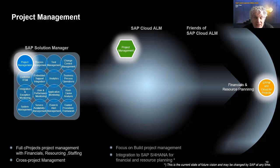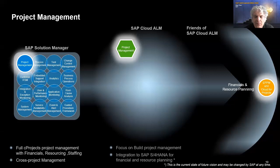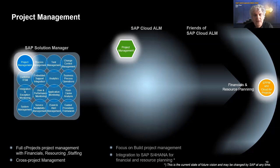In Solution Manager, we have full project support with financial resourcing and staffing. In Cloud ALM, the focus is on tracking the build project progress — more looking at the progress from the software solution side. What we are not providing in Cloud ALM going forward is financials, resourcing, and staffing — which, by the way, not so many Solution Manager customers were actually using. If that functionality was used, it was rather in a separate system for project portfolio management. Going forward, this will be a capability that sits in S/4HANA — you can use either ePPM or Cloud for Projects — and we plan to integrate these S/4HANA capabilities into Cloud ALM going forward.